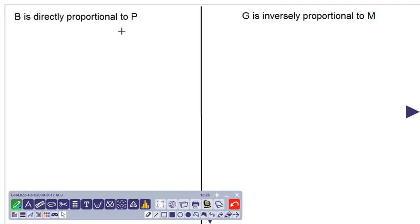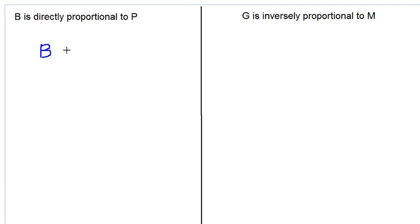So in the case on our left, quantity B is directly proportional to P. What does this mean? It means B is directly proportional to P. We can write it like this.